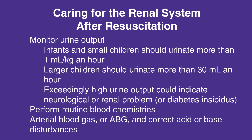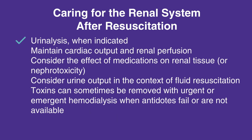When caring for the renal system after resuscitation, follow this checklist: monitor urine output — infants and small children should urinate more than 1 ml per kilogram per hour; larger children should urinate more than 30 ml per hour. Exceedingly high urine output could indicate a neurological or renal problem, or diabetes insipidus. Perform routine blood chemistries.